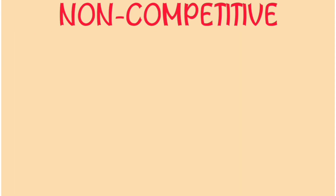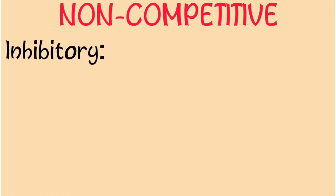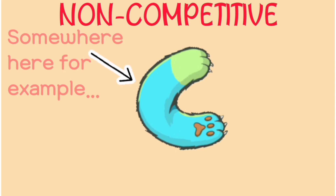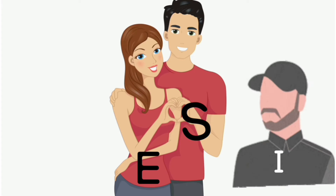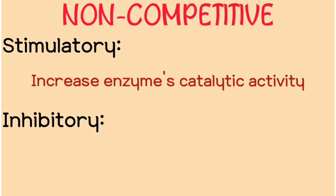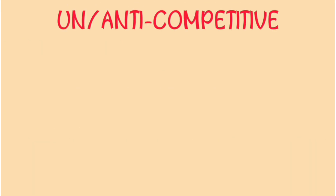The next type is non-competitive regulation — I say regulation here because it can either be inhibitory or stimulatory for substrate binding. These are called non-competitive because they bind to the allosteric sites, not the active site like competitive inhibitors. In the analogy, this other person looks nothing like the first guy and could either help or hinder. A stimulatory regulator increases the enzyme's affinity for the substrate, while inhibitory regulators do the complete opposite.